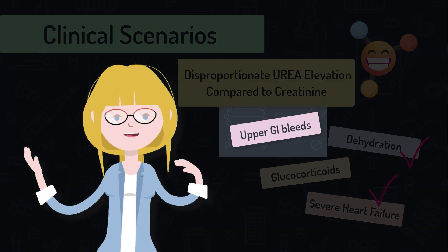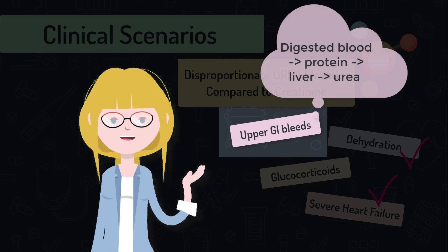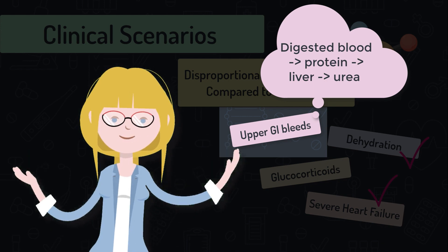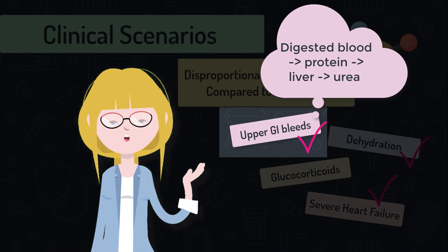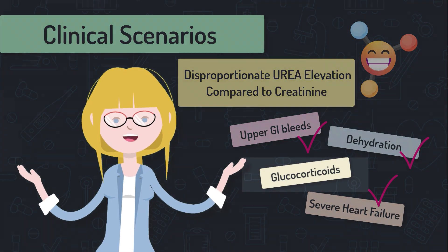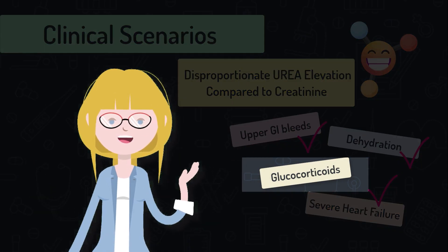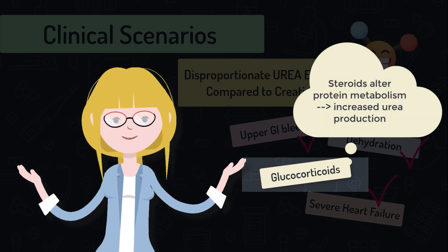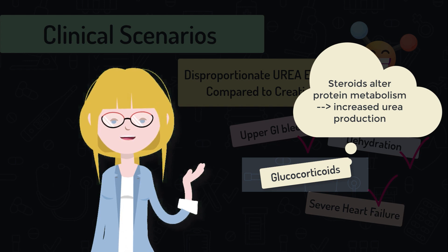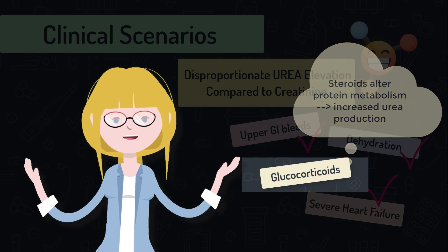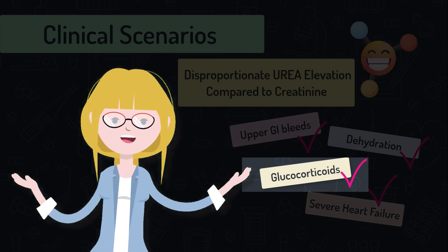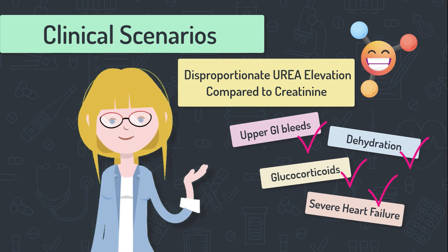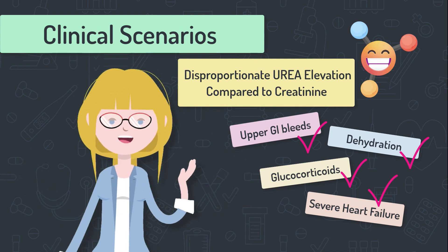Upper GI bleeds can lead to disproportionate urea elevation because when blood enters the small intestine it is digested into protein, which is transported to the liver where it is processed and urea is generated. Lastly, glucocorticoid use is about urea production — corticosteroids impact protein metabolism and result in increased urea synthesis in the liver. So sometimes on very high dose steroids you'll see urea increase disproportionately to creatinine. Those are all the clinical scenarios that lead to disproportionately elevated urea compared to creatinine.